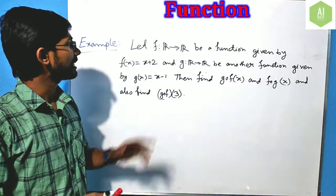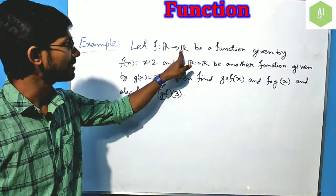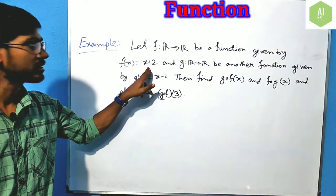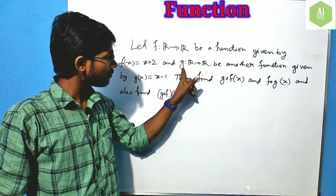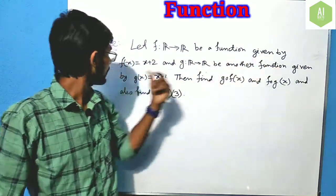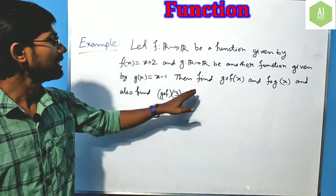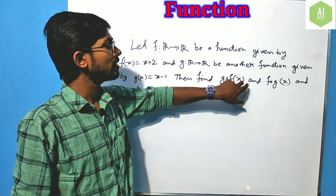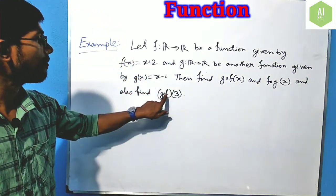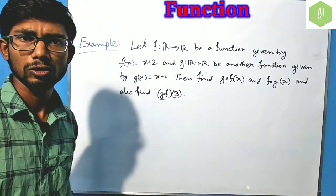Now let's consider this example. Let f be a function from R to R, where R is the real numbers, given by f(x) = x + 2. And another function g, whose domain and codomain are also real numbers, given by g(x) = x − 1. Then you have to find g compose f of x, f compose g of x, and also g compose f of 3.